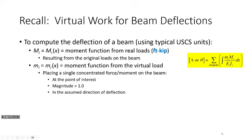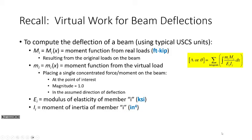We take our big M's as functions from the real loads on the structure, and the virtual moment functions come from kicking all those loads off and placing a single unit load at the point of interest — magnitude of 1 in the assumed direction of deflection. For displacements we use a unit force; for rotations or slopes we use a unit moment. Because our moments are variable — as opposed to trusses where forces were constant — we're going to have to integrate and sum those integrals.